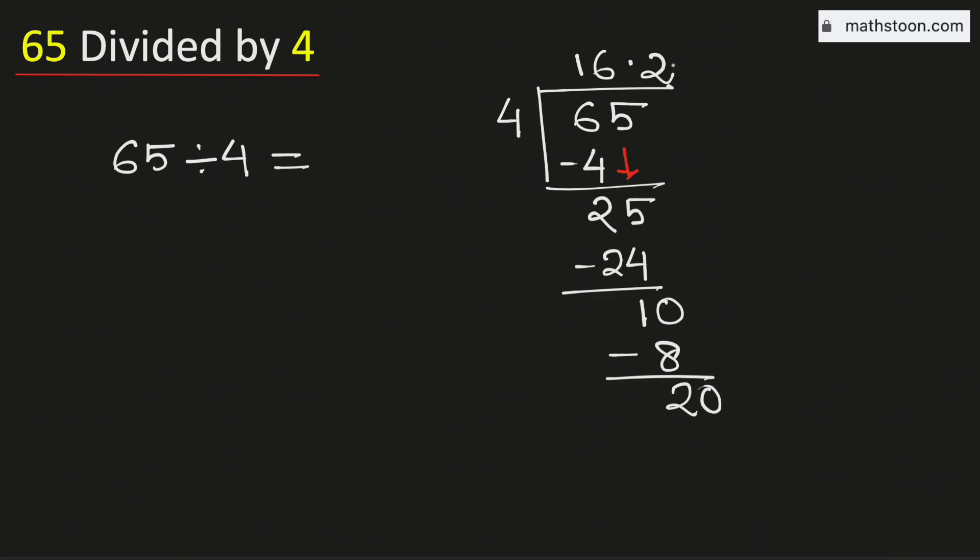And we know 4 times 5 is 20. Subtract we get 0. As we have obtained the number 0, so we will stop.